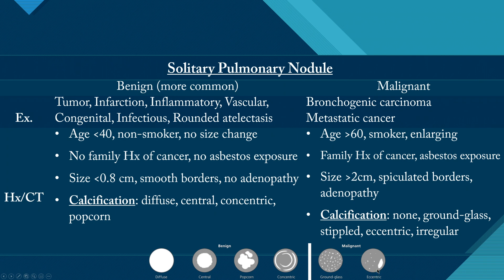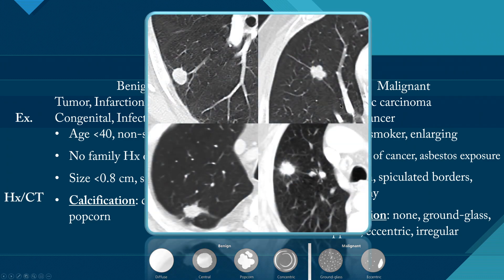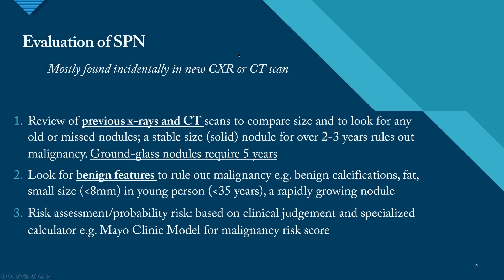Looking at CT examples: a smooth border nodule is more probably benign. A lobulated shape is intermediate — it carries intermediate risk of being malignant. A nodule with irregular borders is clearly more concerning for malignancy. And a spiculated or corona radiata type of nodule is very likely malignant.